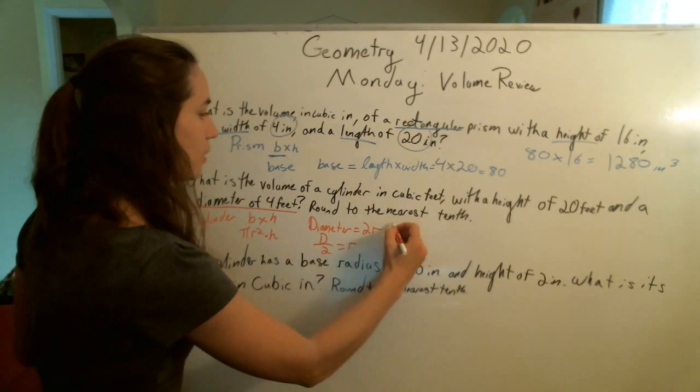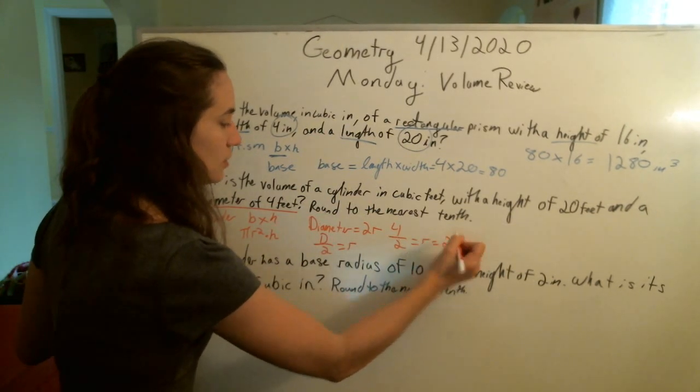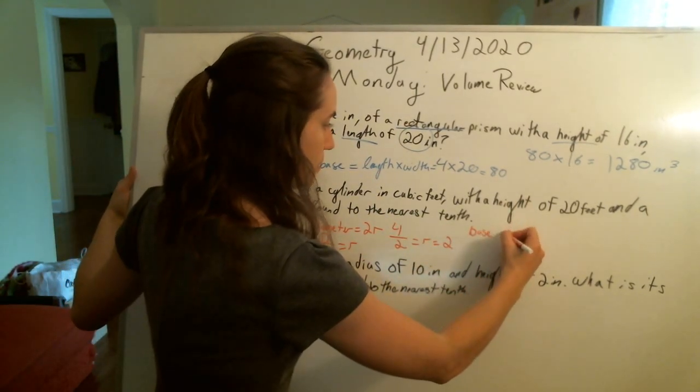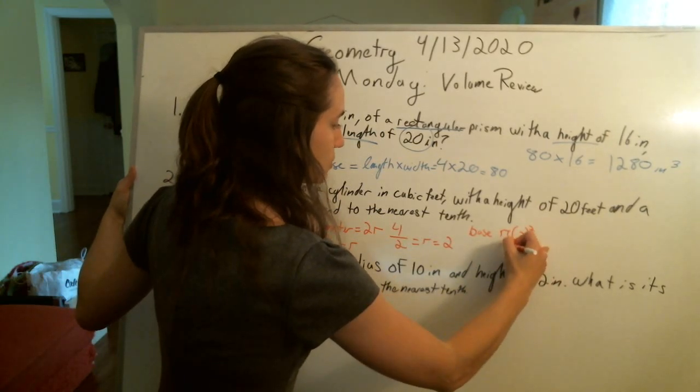For our base, it is going to be pi radius squared, so that's going to be 4 pi. I know you all don't have calculators at home that necessarily have pi. Pi is the same thing as 3.14.